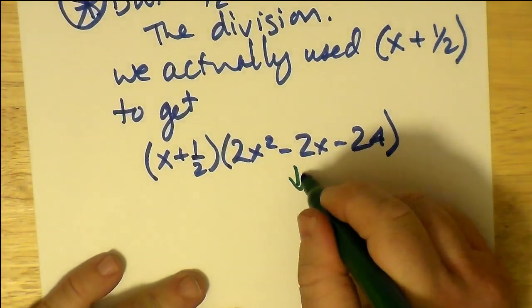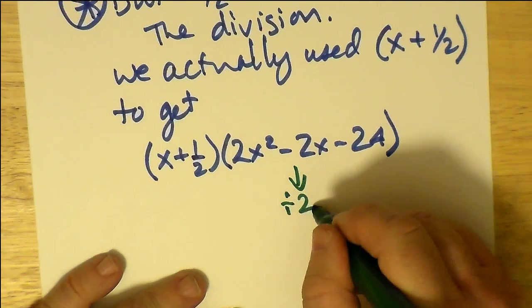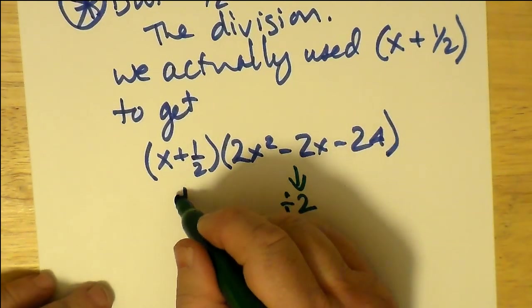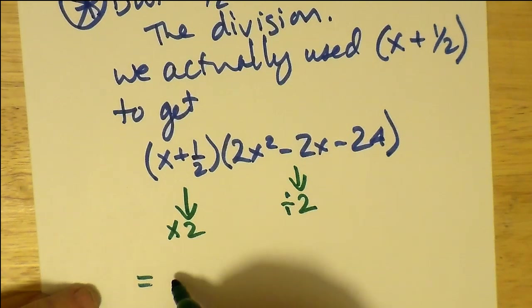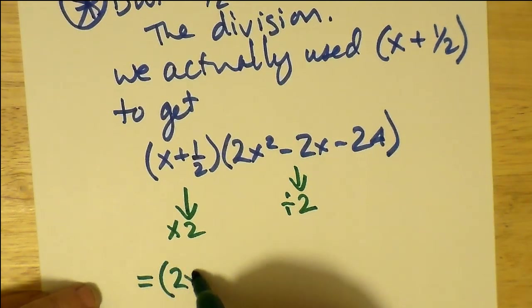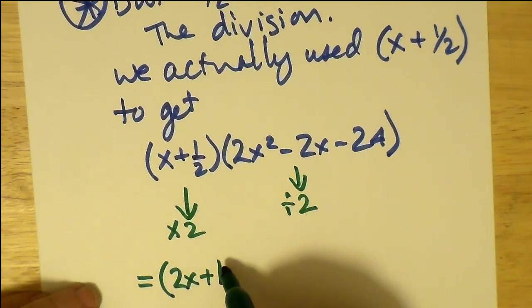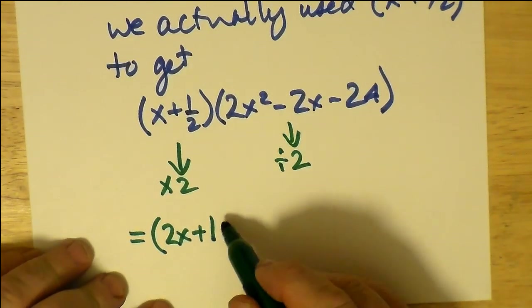So what we're doing here is, to get the correct factorization, we have to multiply the first factor by 2 and divide the second factor by 2. In effect, we're getting the equivalent expression but with the correct factoring this time.